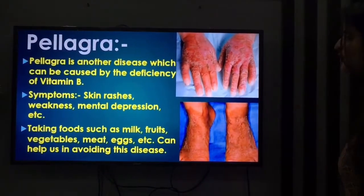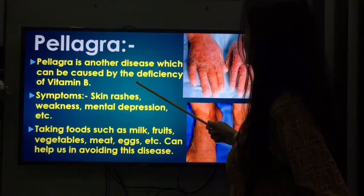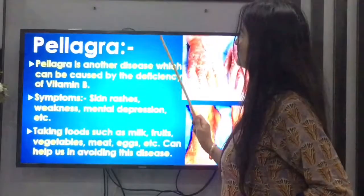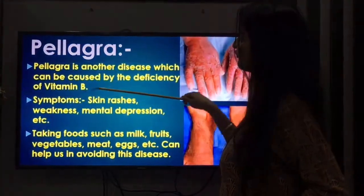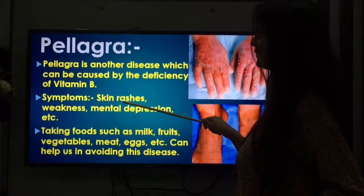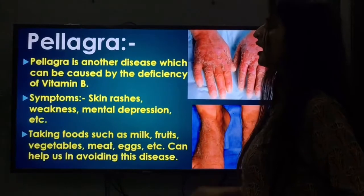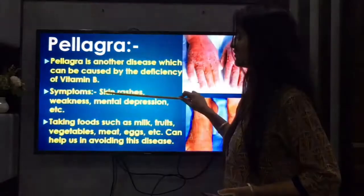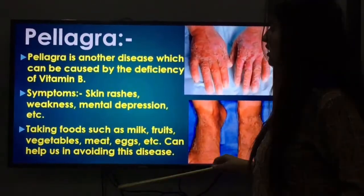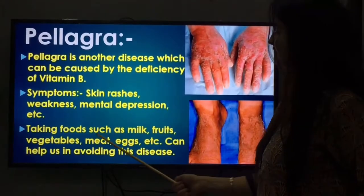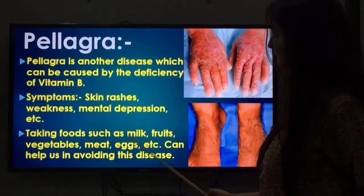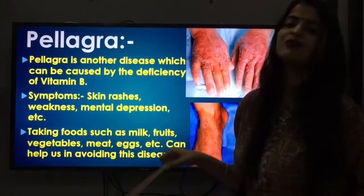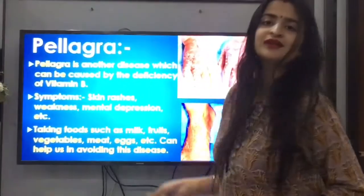Next is Pellagra. Pellagra is another disease caused by the deficiency of vitamin B. Both beriberi and pellagra are caused by deficiency of vitamin B. The symptoms of pellagra include skin rashes, weakness, and mental depression. Taking foods such as milk, fruits, vegetables, meat, and eggs, which are rich in vitamin B, can help us avoid pellagra.